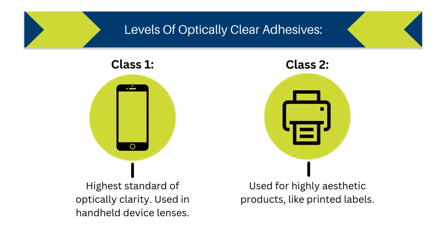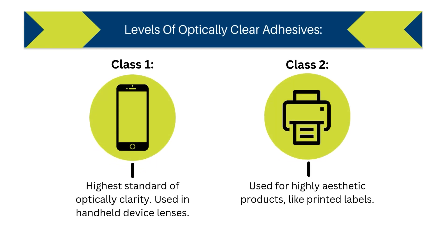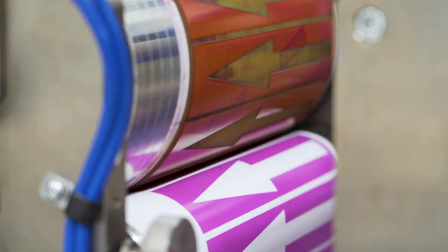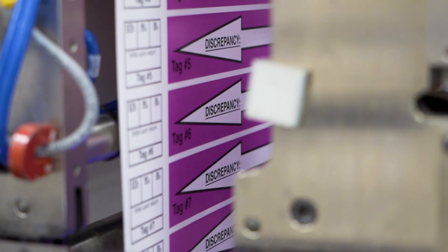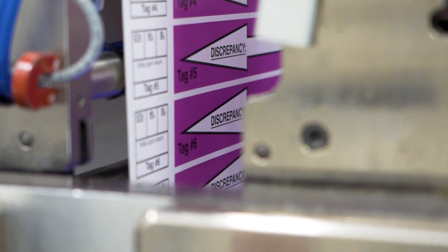Second is class 2. This is used if a highly aesthetic or quality product is desired, such as printed labels, decorative features, and permanent device applications.